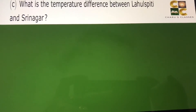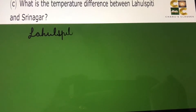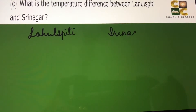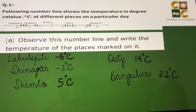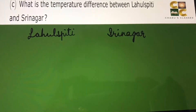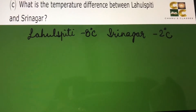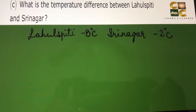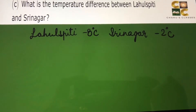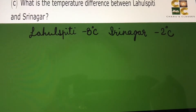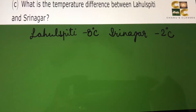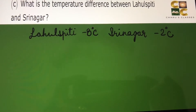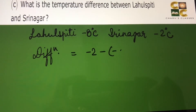Part C: What is the temperature difference between Lahulspiti and Srinagar? Lahulspiti is minus 8 degrees Celsius and Srinagar is minus 2 degrees Celsius. We take Srinagar's temperature first because minus 2 is greater than minus 8. So the difference is minus 2 minus (minus 8).